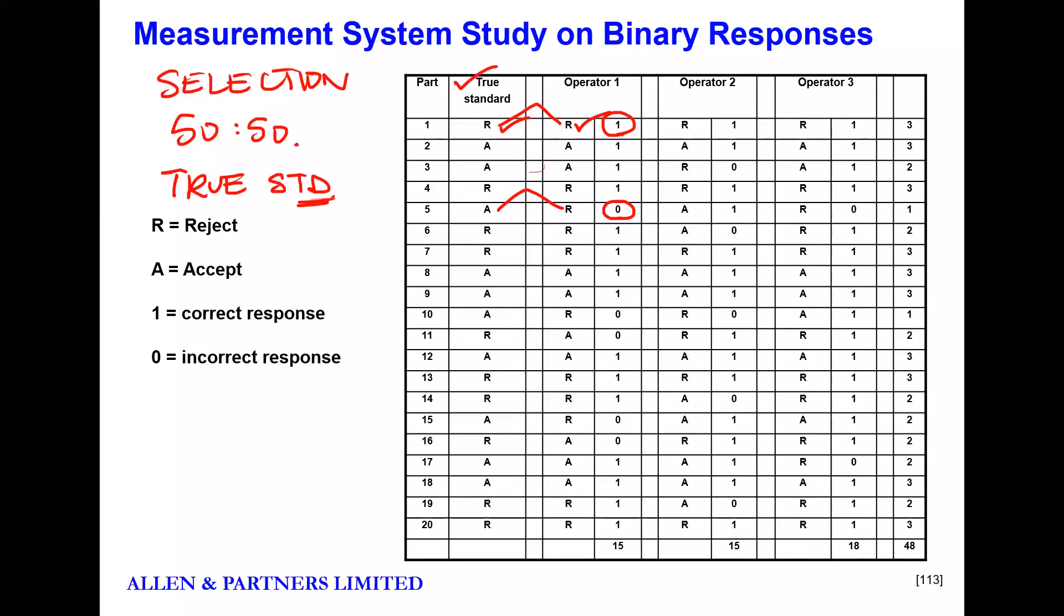And then very simply, all we're going to do as part of the MSA, is we're going to assess how many did they get right as a percentage. So you can see here, this system got 15 out of 20. Well, that is 75% correct. That is known as the effectiveness of this measurement system. So there's the effectiveness. We can work out the effectiveness for an individual operator, 15 out of 20.